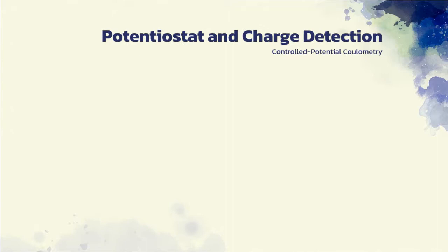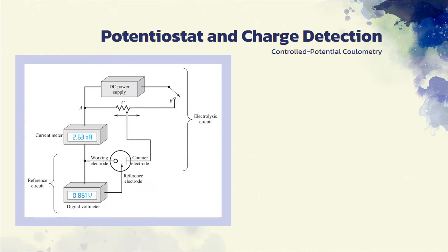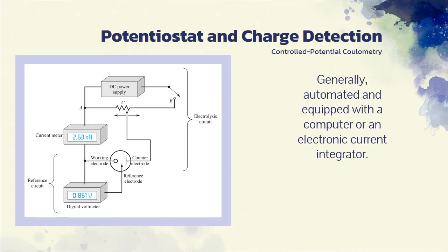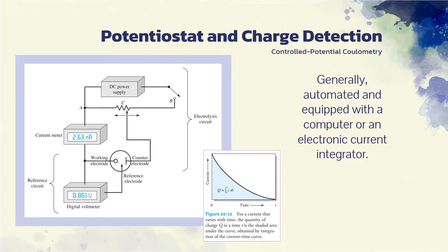In controlled potential coulometry, a potentiostat with this design is often used. Generally, however, the potentiostat is automated and equipped with a computer or an electronic current integrator that gives the charge in coulombs necessary to complete the reaction, such as shown in this figure.